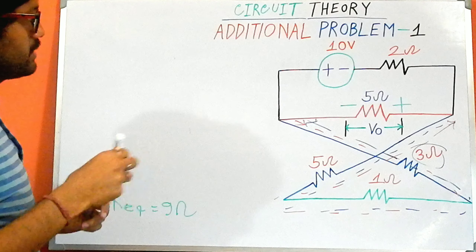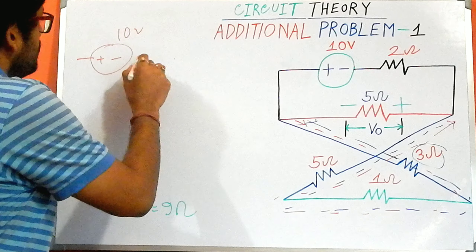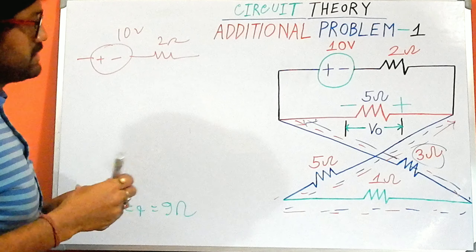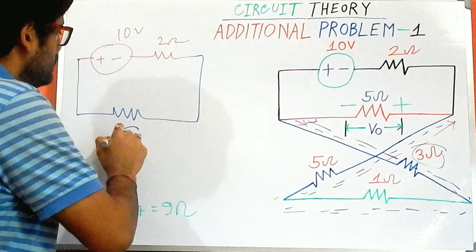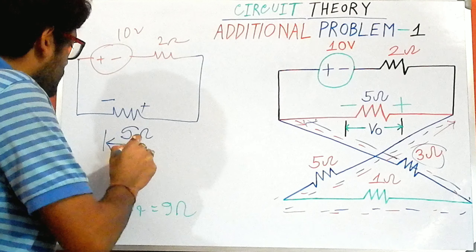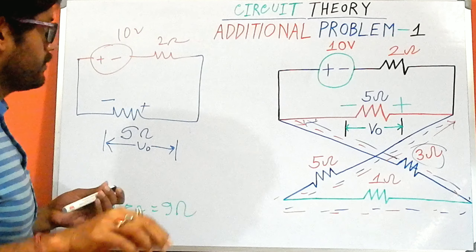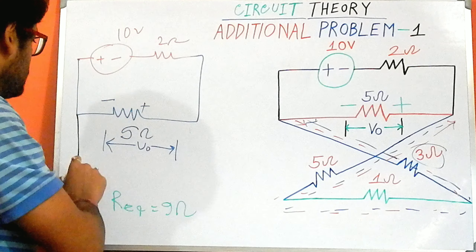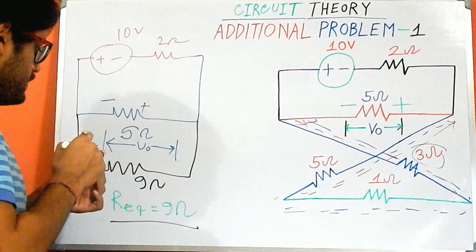The circuit looks like this: here I have a 10 volt source, a 2 ohm resistor, and on the downside a 5 ohm resistor has been placed with the polarity shown. Across this we need to find the value of V0, which is our main objective, and the equivalent resistance for the cross path is 9 ohm.